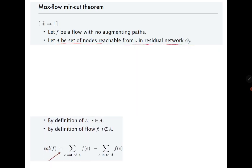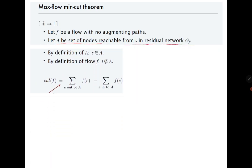The flow f definition we already know. To equate it to the capacity, we are looking at edges out of A summing c(e) — this is the definition of capacity(A, B) — and the inward term should be zero.